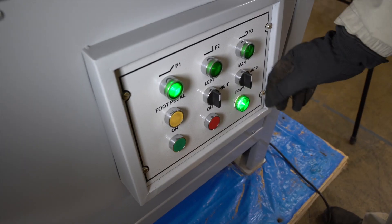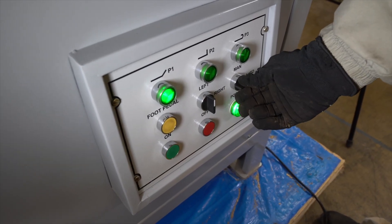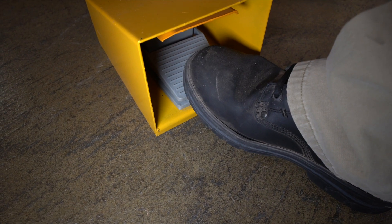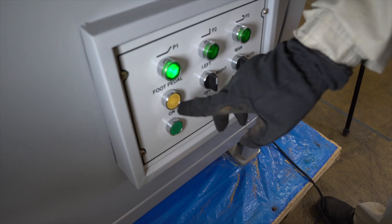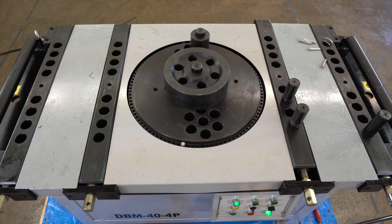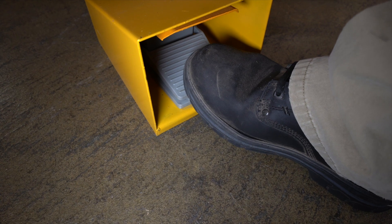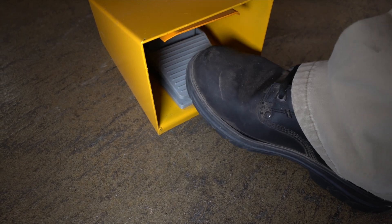It's worth noting that there are two operational modes, auto or manual. When in manual mode, you need to hold the foot pedal or the foot pedal button continuously for a bend. If you let up on the foot pedal, the machine will stop. Useful for setting up machine operation.